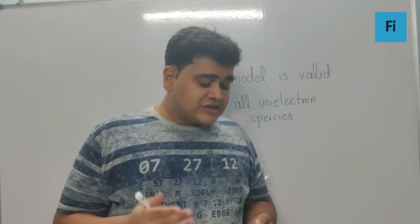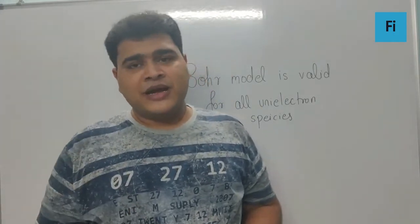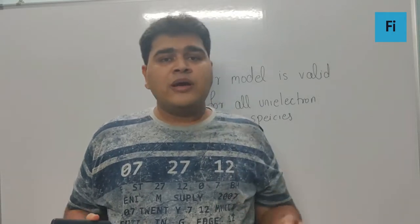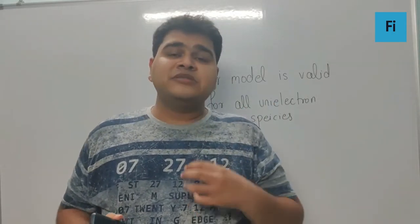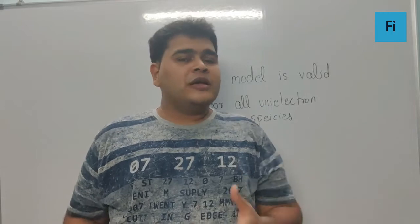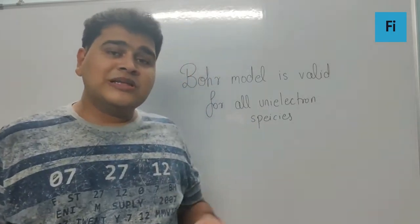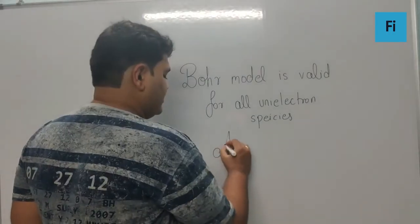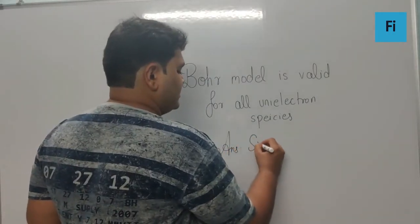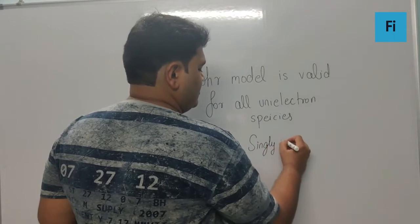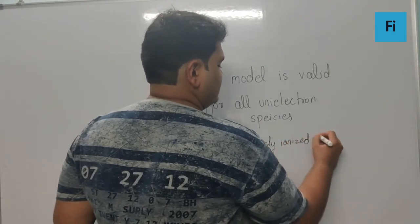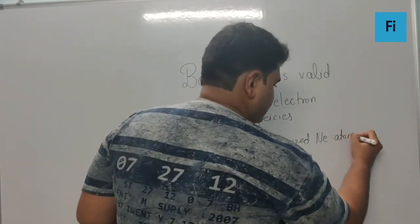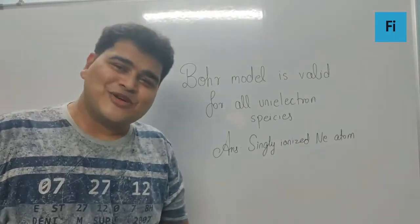But singly ionized neon atom — neon in general has ten electrons. When you ionize it once, it has nine electrons in its orbits, for which the Bohr model is definitely not valid. So your answer is going to be singly ionized neon atom.